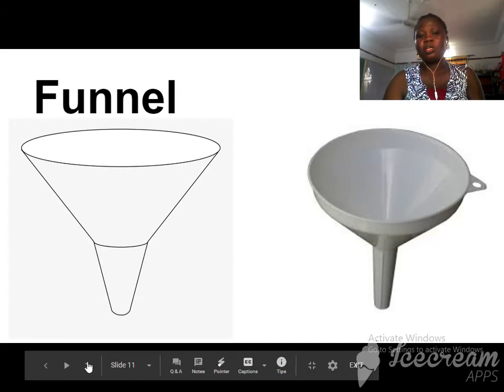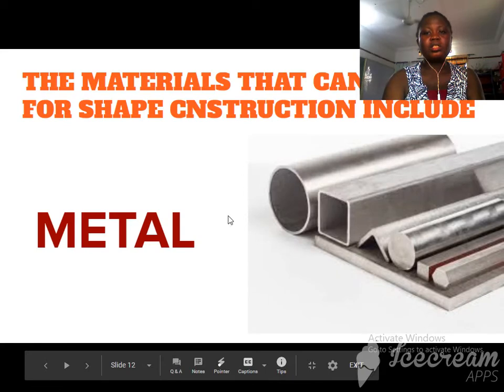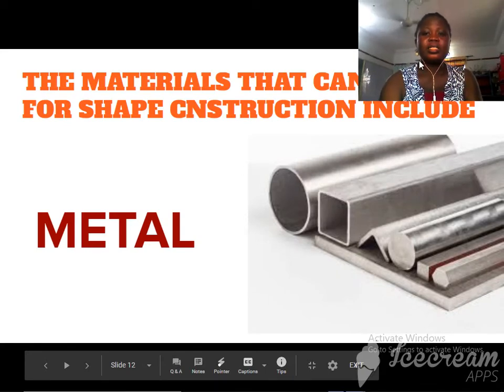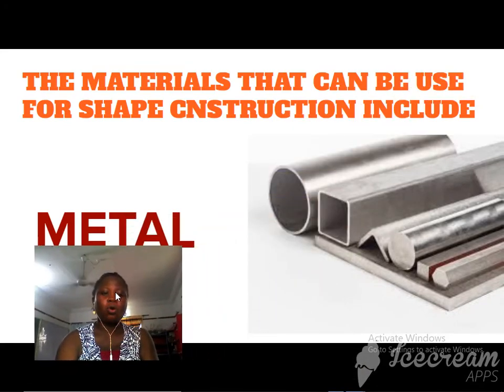We make these objects. I think we use a triangle for this one to make a funnel. Let's see some materials used in shape construction. These are the materials we use for shape construction.